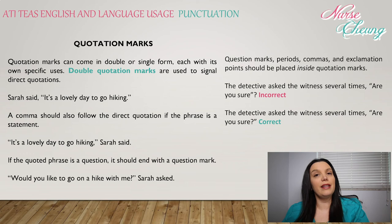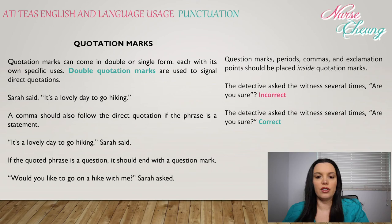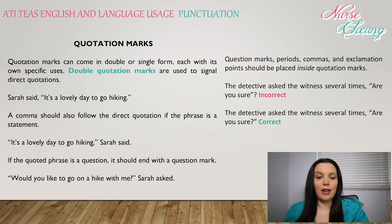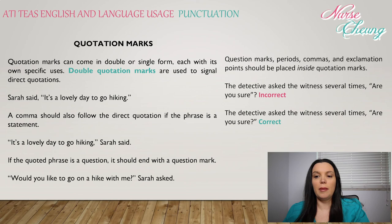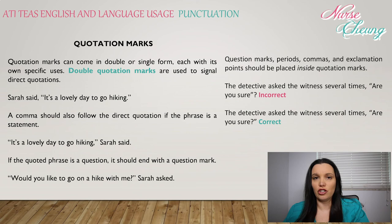Quotation marks come in double and single form, each with its own specific use. Double quotation marks are used to signal direct quotations: 'Sarah said, "It's a lovely day to go hiking."' A comma should always follow the direct quotation if the phrase is a statement. If the quoted phrase is a question, it should end with a question mark: '"Would you like to go hiking with me?" Sarah said.' Question marks, periods, commas, and exclamation points should be placed inside quotation marks. 'The detective asked the witness several times, "Are you sure?"' — correct, with the question mark inside.